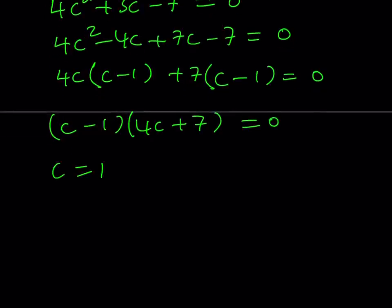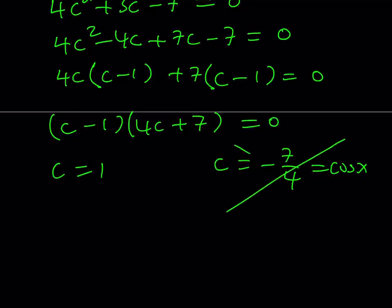From here, we get two solutions: either c equals 1 or c equals negative 7/4. But remember, c is cosine x, and cosine cannot be less than negative 1 nor greater than 1. Negative 7/4 is obviously less than negative 1, so that solution does not count. We're going to go with c equals 1.